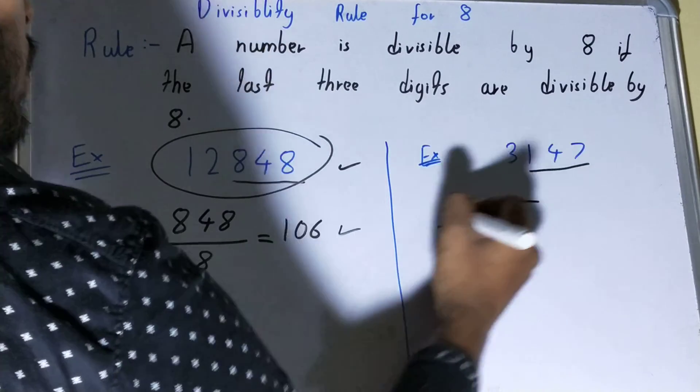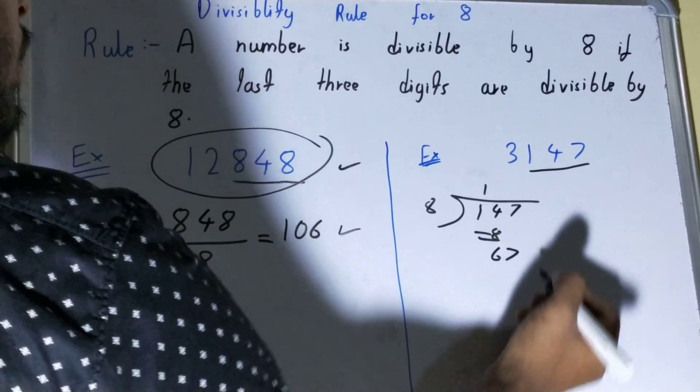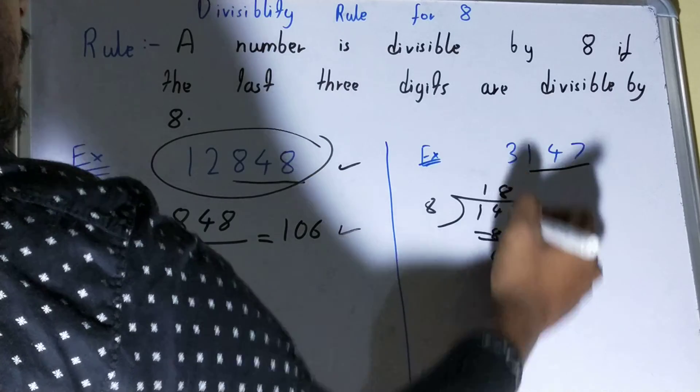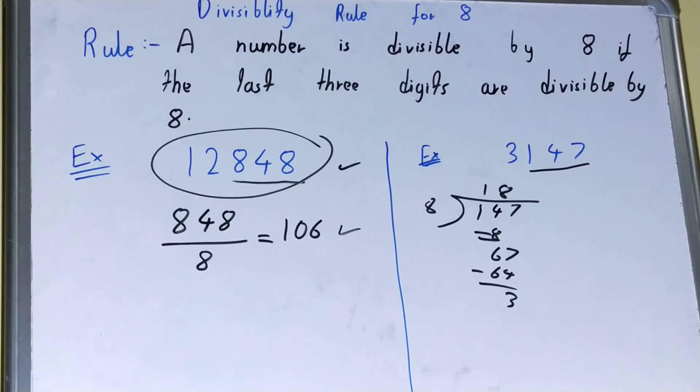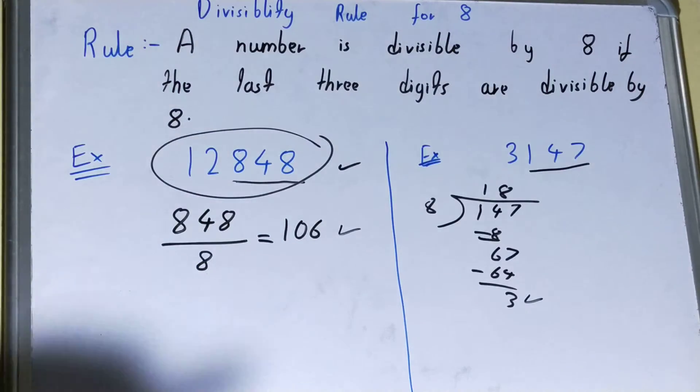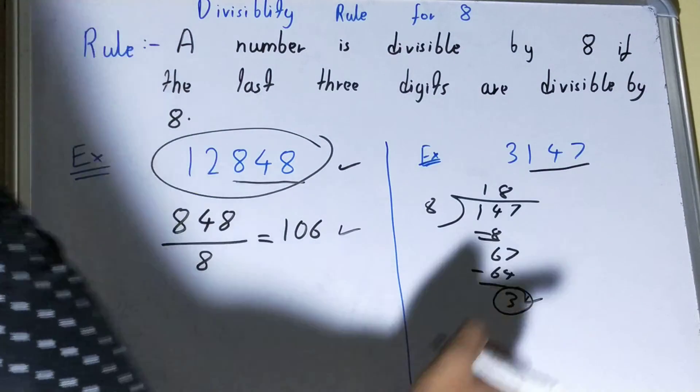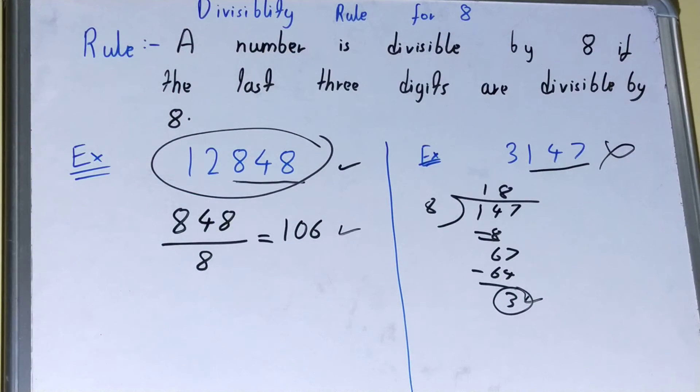8 goes into 1 zero times. 8 goes into 14 once, so 8. We are left with 6. Bring down the 7. 8 goes into 67 eight times. That's 64, and we are left with remainder 3, which is the problem because 3 is less than 8. We are left with remainder 3, not zero, so it is not divisible by 8.